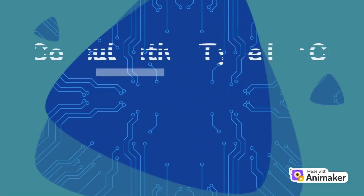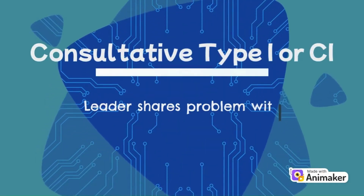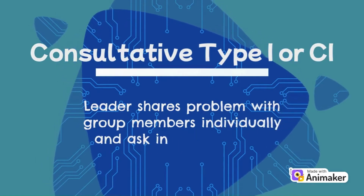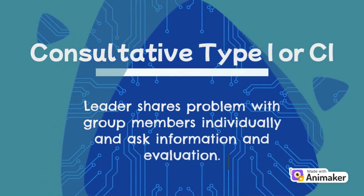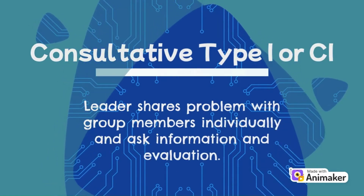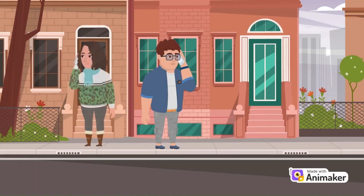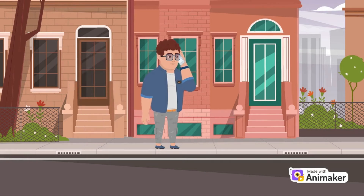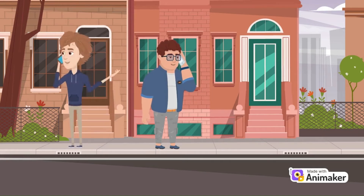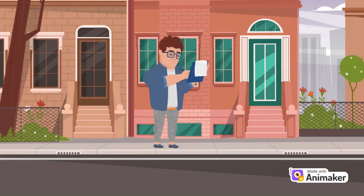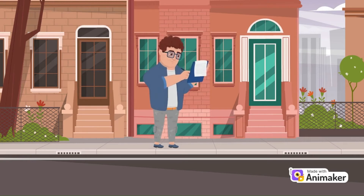Next is Consultative Type 1, or C1. The leader shares the problem with group members individually and asks for information and evaluation. Team members do not meet collectively, and the leader still makes the decision alone. You consult with your friends individually via personal messaging or face-to-face regarding how to book the ticket or what seat is the best in the theatre, then you make the final decision.